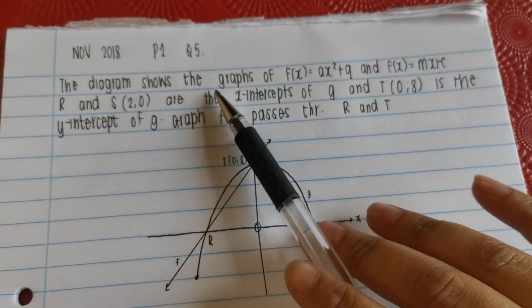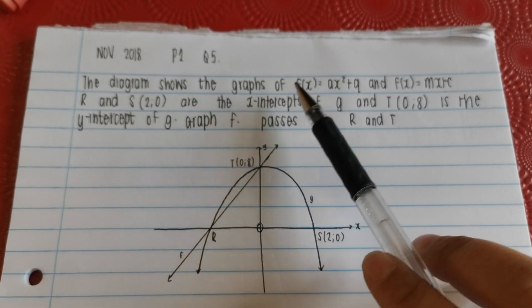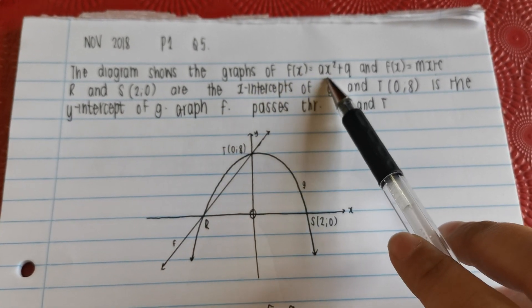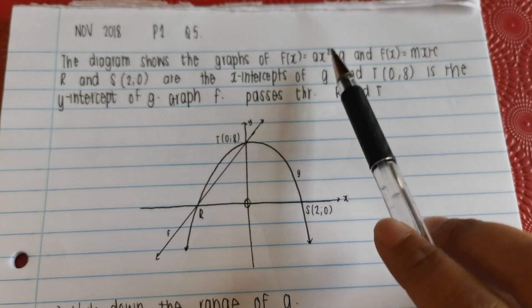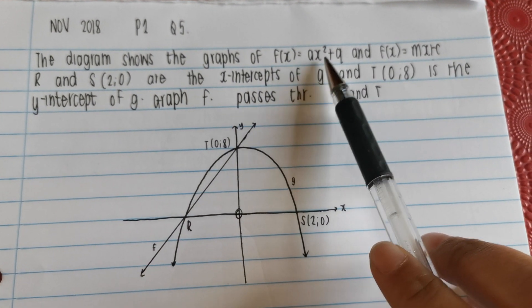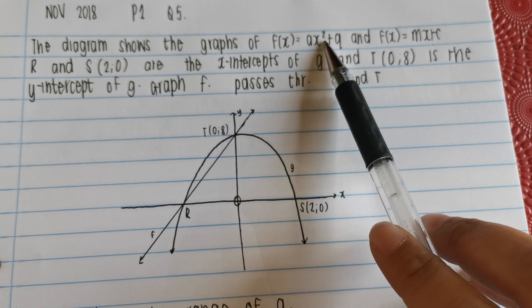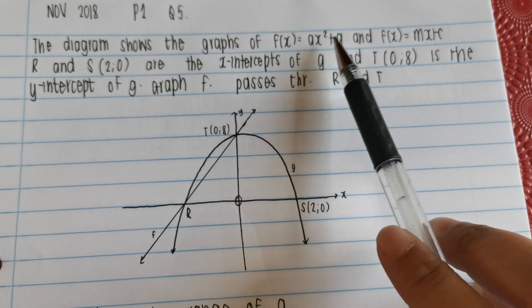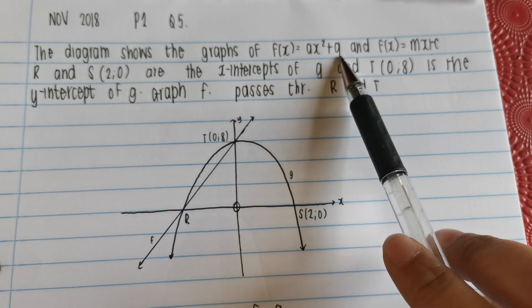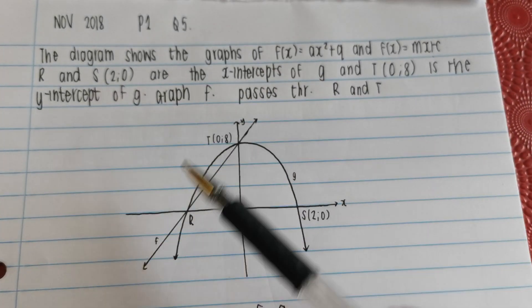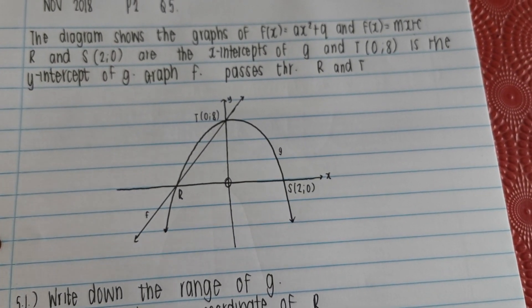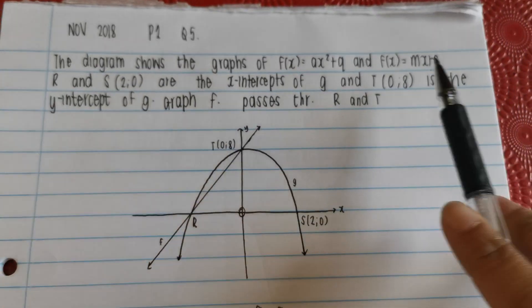Let's read and analyze. It says the diagram here shows the graph of f(x), which is ax squared plus q. Before we even look at the diagram, we know that this is a parabola because our x value is squared. So parabola. We also know that this q value tells us whether it shifted up or down, and it's also in grade 10 the y-intercept.